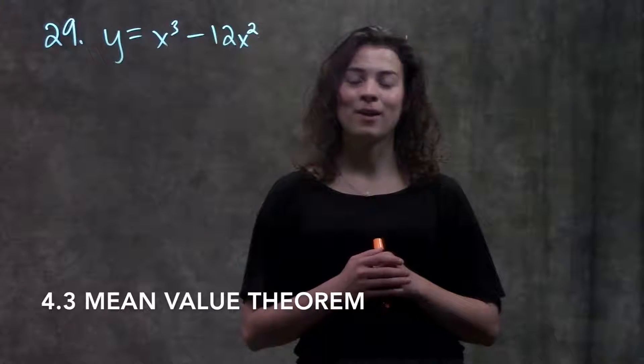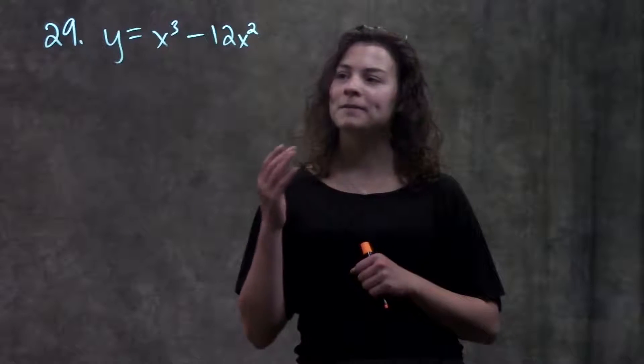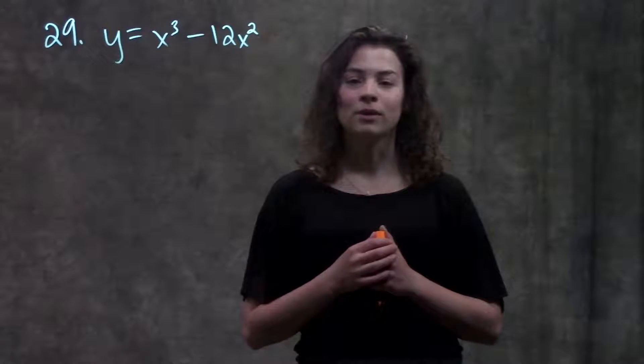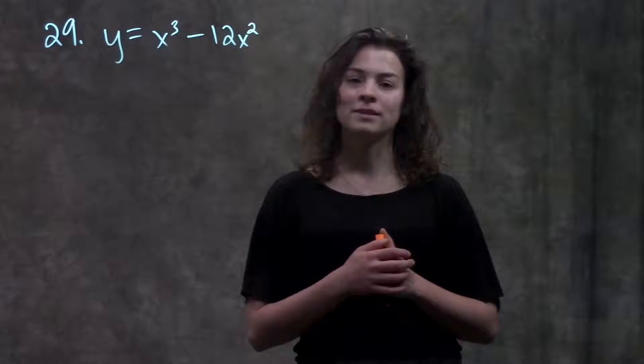This is section 4.3, Mean Value Theorem. In this video, we're going to go through example 29 in your book. It gives us this function and asks for the critical points, the intervals on which it's increasing and decreasing, and the min and maxes of the function.